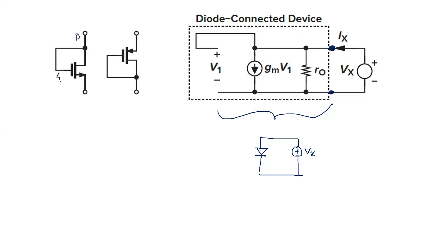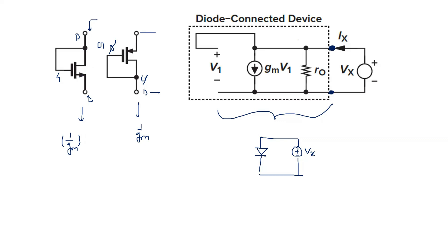If you want to measure its impedance between two terminals, using the small signal model we can find its impedance. By making the gate-drain short in the small signal model and applying a test source Vx between the two open terminals, we get the impedance as 1/gm. In both cases it is 1/gm. Whether you look from the lower side or upper side, if you calculate the impedance from the drain side, the other terminal is grounded, and the impedance will be 1/gm. Similarly from the source side, it is also 1/gm.